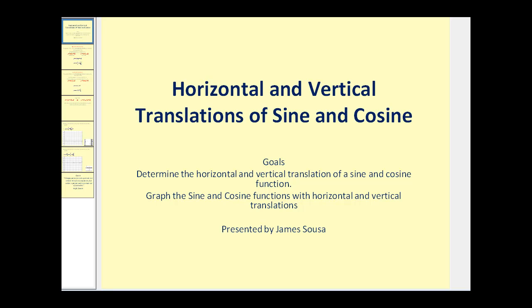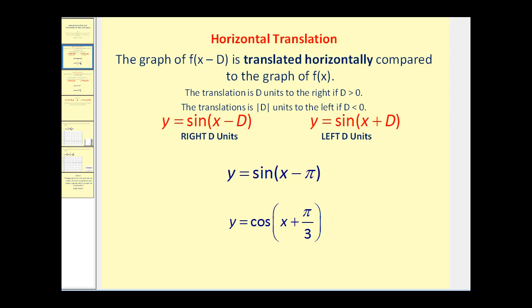Welcome to the second of three videos that deal with the transformations of sine and cosine. We just talked about amplitude and period, now we'll talk about horizontal and vertical translations of the sine and cosine functions. The goals are to determine the horizontal and vertical translations of a sine and cosine function, and then also to graph the sine and cosine functions with these types of translations. Let's start by talking about horizontal translations.